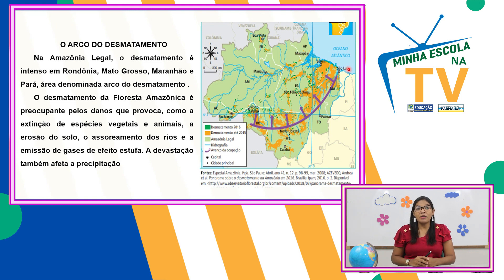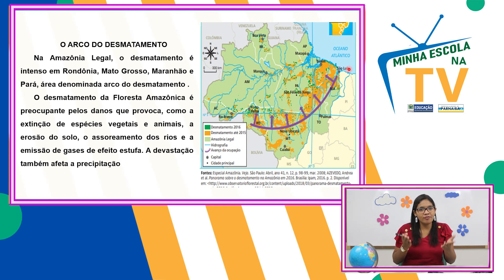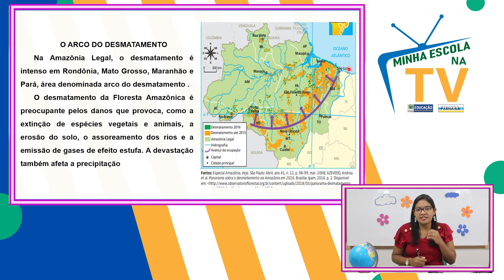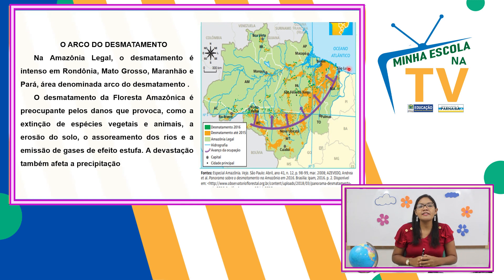O desmatamento na floresta amazônica é preocupante pelos danos que provoca: a extinção de vegetais e animais, a erosão do solo, o assoreamento dos rios — a floresta é sempre cortada por rios, e o desmatamento interfere sim —, e a emissão de gases de efeito estufa. A devastação da floresta também vai afetar a precipitação, ou seja, a presença de chuvas. Um problema vai acarretando outro problema e assim sucessivamente.